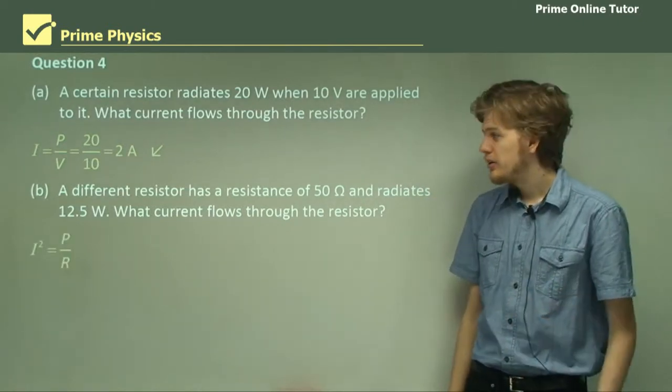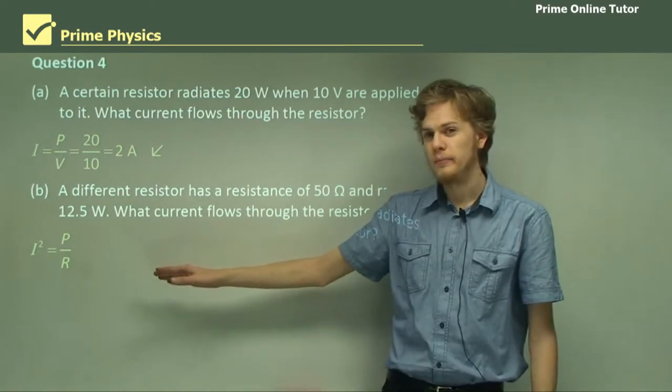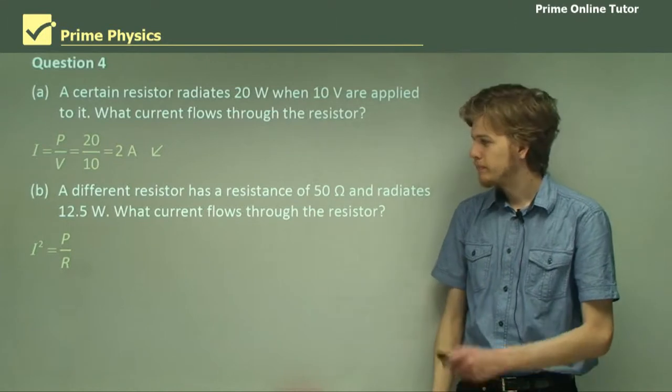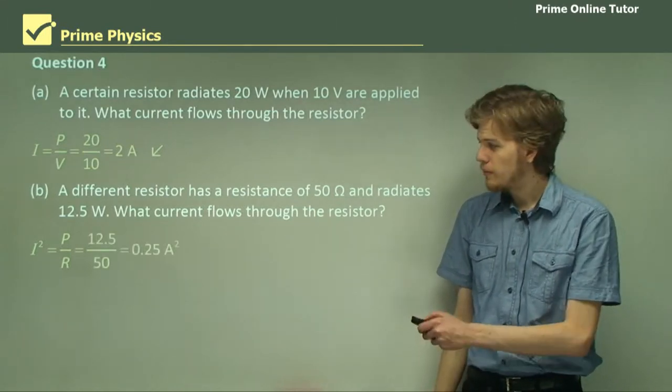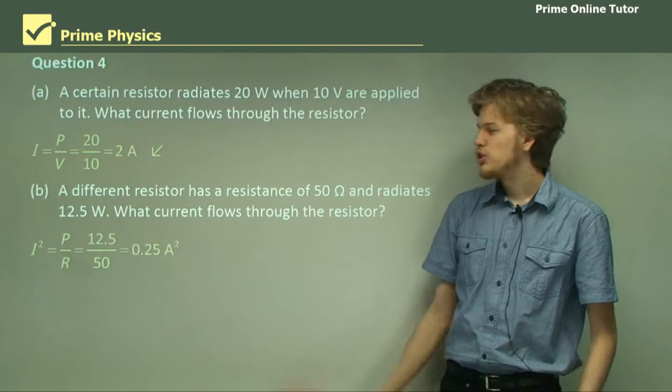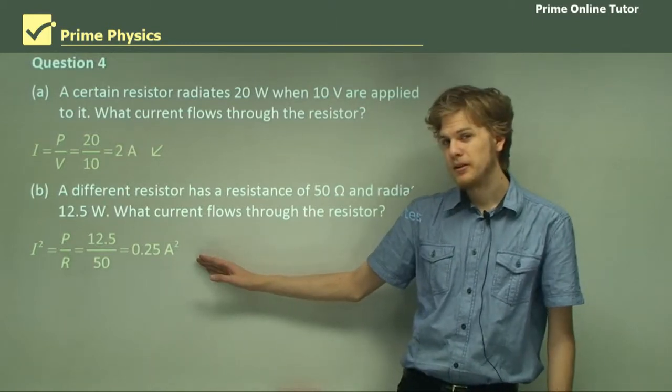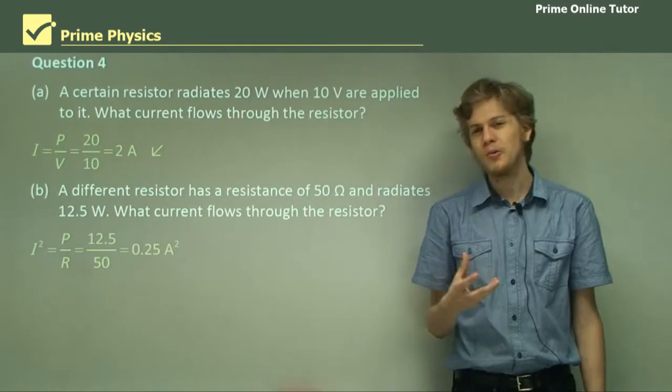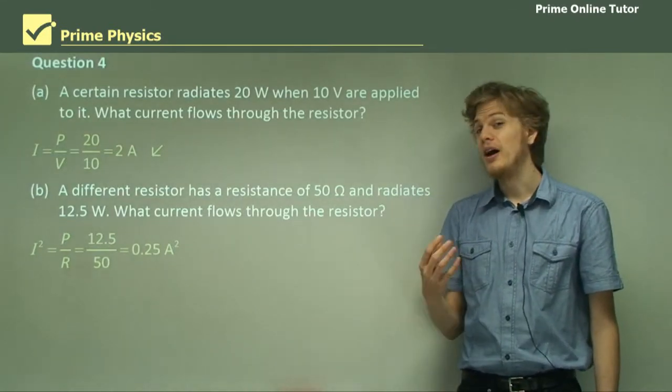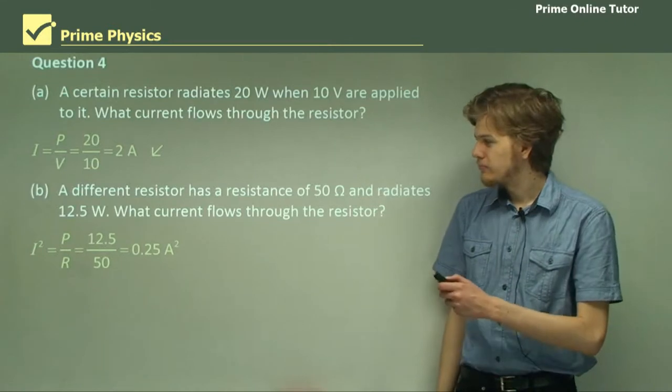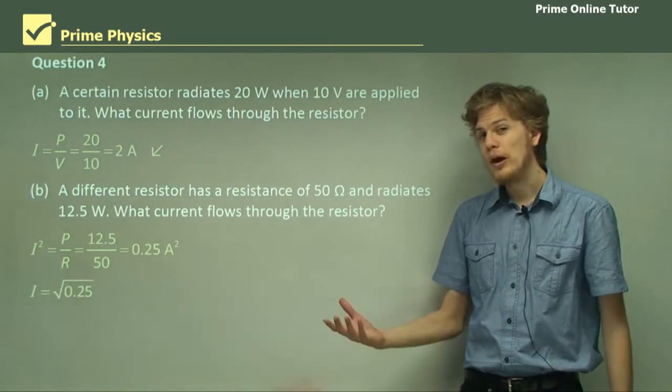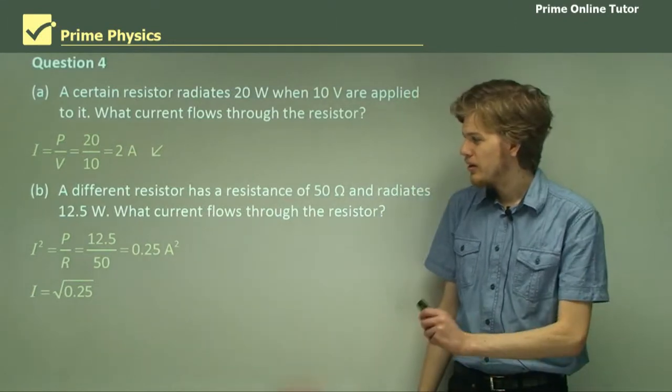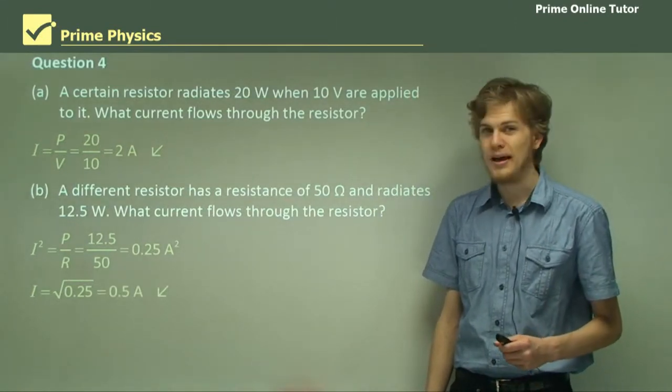Rearranging, we have I squared equals P over R. P equals 12.5. R equals 50. This gives us an answer of 0.25 square amperes. Now, because our answer is in square amperes, we haven't actually discovered the current yet. We've found I squared. The current itself will be the square root of 0.25 square amps, which will be of course 0.5 normal amps.